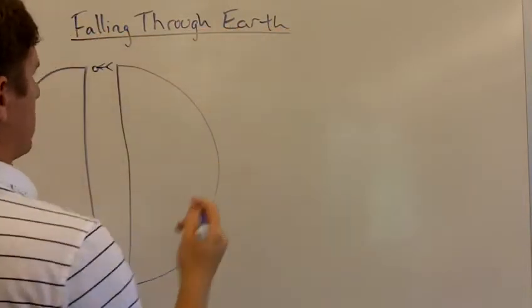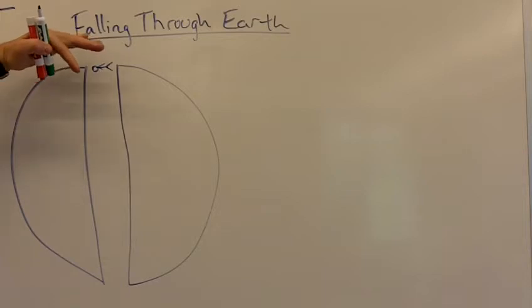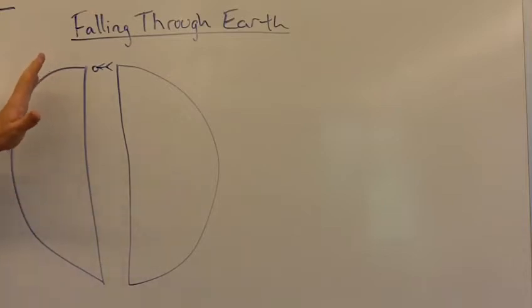Falling through the center of Earth. This is the problem where we drilled a shaft down through the center of the Earth and avoided all the liquid hot magma and hot rock, hard iron core, and everything. We imagined that we were just going to jump through the Earth and see what happened.